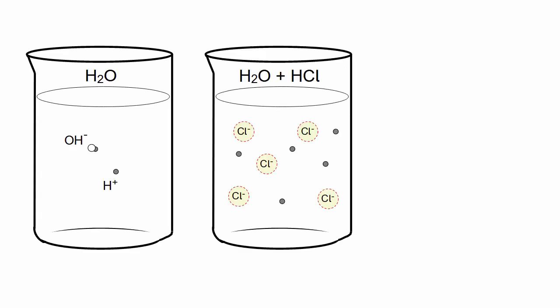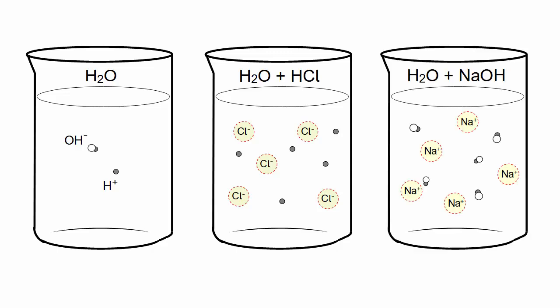Adding hydrochloric acid greatly increases the number of H-plus ions. Conversely, adding sodium hydroxide greatly increases the number of OH-minus ions.